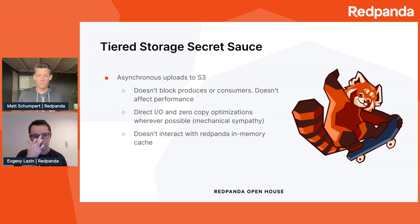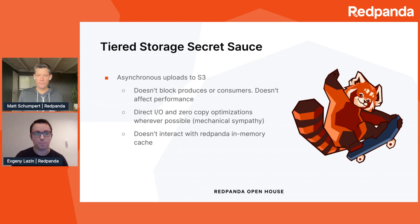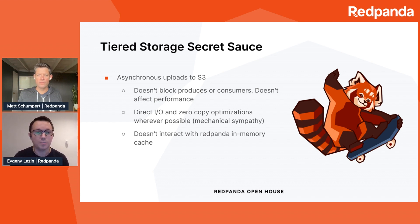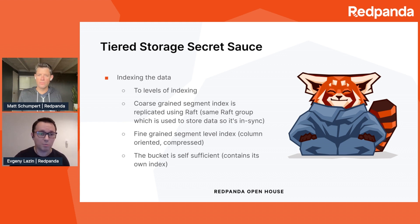It sounds simple, but we have some secret sauce and different mechanisms that make it more efficient than usual. First of all, the upload path is asynchronous, which means we don't block producers or consumers when we upload something. We're also not affecting performance at all, because we optimized this code very well. We use direct IO and zero-copy mechanisms to do this, and we also don't interact with the Red Panda batch cache, so the cache won't be evicted just because we upload something.